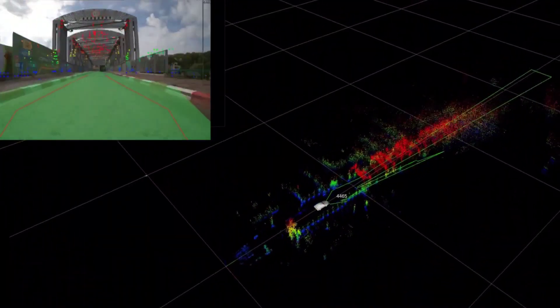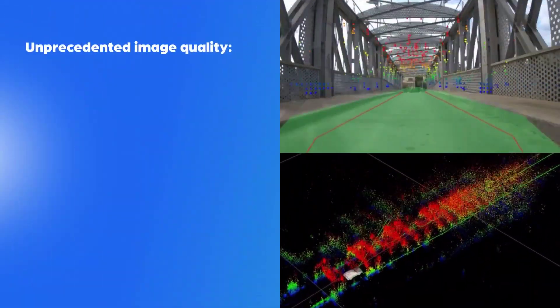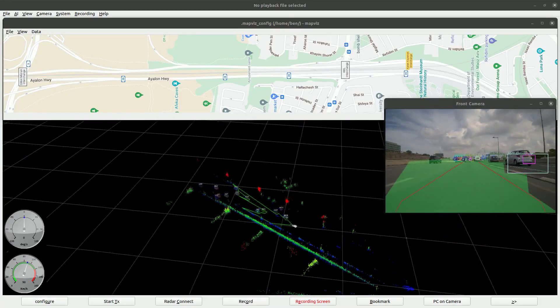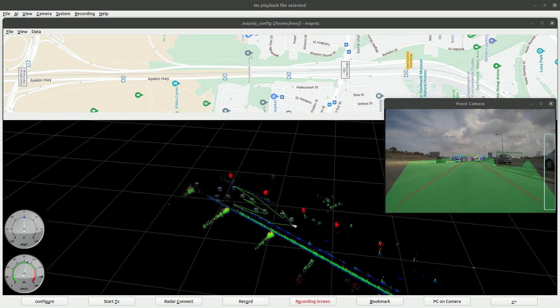Arbe's radar systems are also being integrated into non-automotive sectors, including drones, robots, and smart traffic systems through partnerships such as with Viennere and Camcom.